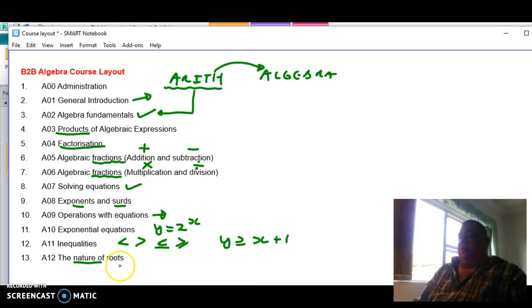And then the nature of the roots. The roots are the solutions that we find. X is equal to this or X is equal to that. Those are the roots. And we want to know, what are the nature? What type of numbers are there?